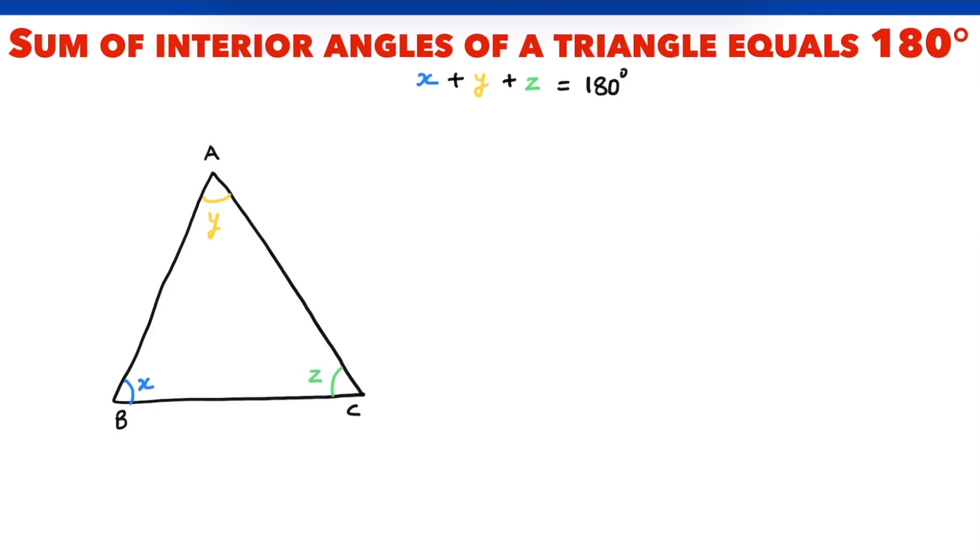How do we go about this? Let me start by extending the side BC in both directions. Next, let me draw a line DE that passes through point A and is parallel to BC. Finally, we also extend AC in both directions.